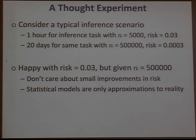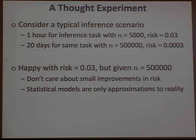Why might you be happy with a risk of 0.03? This is reasonable because in many cases you may not care about small improvements in risk. In many settings, statistical models are only approximations to reality, and when estimating parameters, accuracies of this type are typically more than sufficient to make informed decisions.